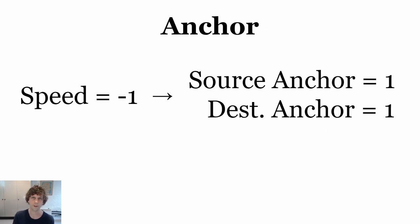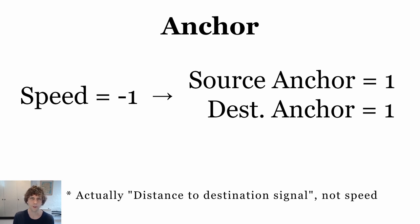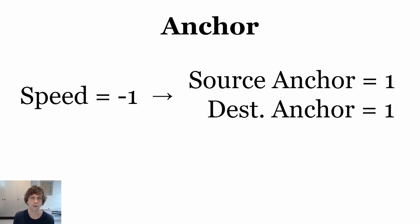For anchoring, this is the simple one. The spaceship console will give us a negative one signal on the speed signal whenever it arrives, so we can then just output the source and destination anchors. If you use the same source and destination anchor numbers at both places, then it just simplifies your logic.